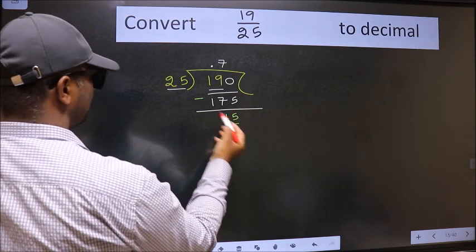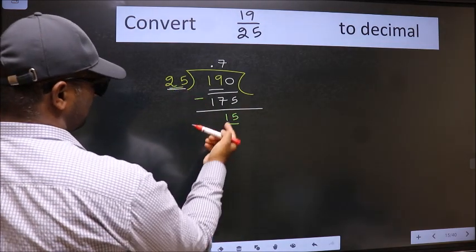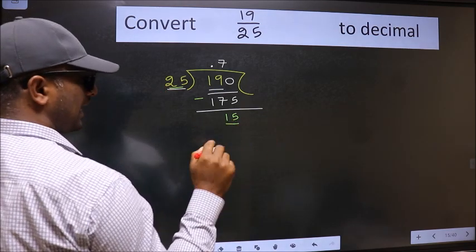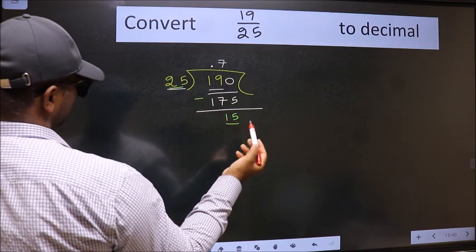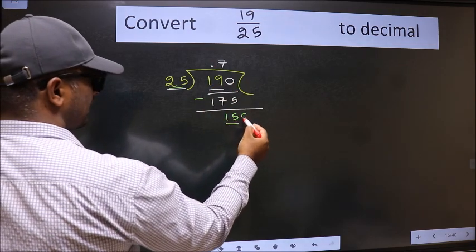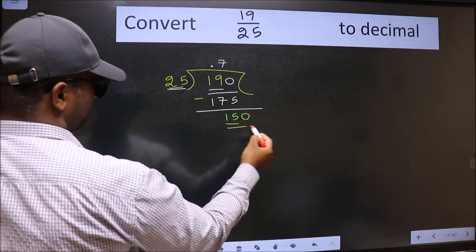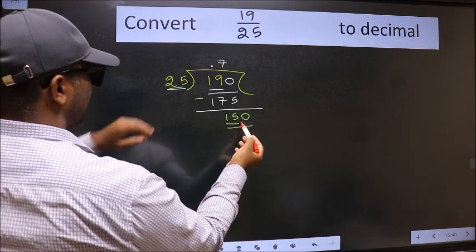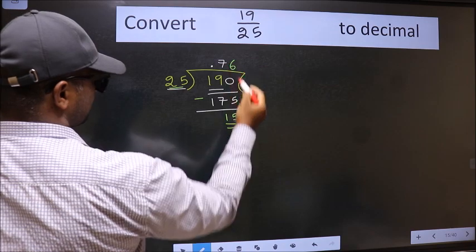Now here we have 15 and here 25. 15 is smaller than 25, and we already have the decimal, so this time we can directly take 0. So 150. When do we get 150 in the 25 table? 25 times 6 equals 150.